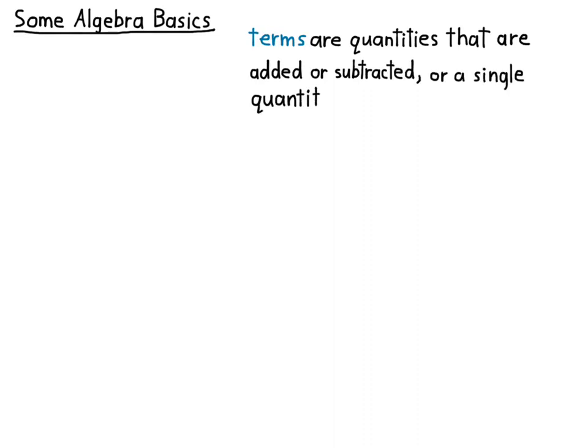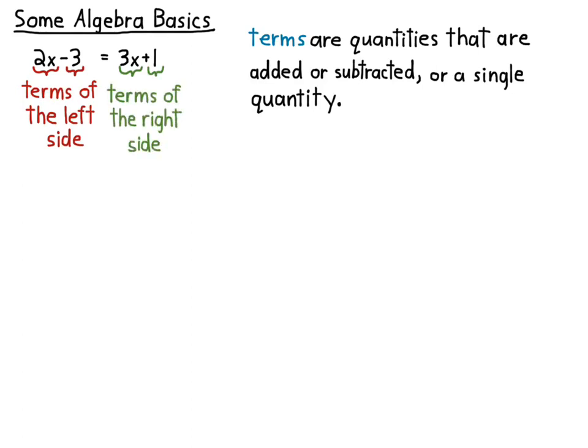Now honestly, you could just say that they're quantities that are added, because of course subtracting is just adding a negative. Single quantity, you can think of as a single quantity plus zero. So it's being added to zero in a sense, but you don't have to think of it that way. It's easier just to think of it as a single quantity. I'll show you an example of those in a minute.